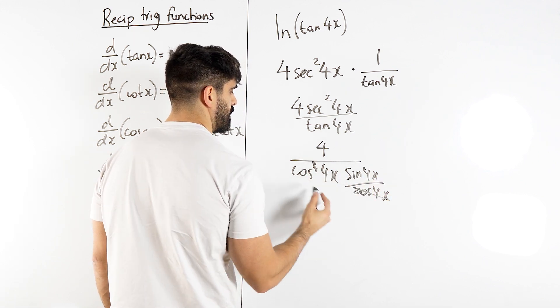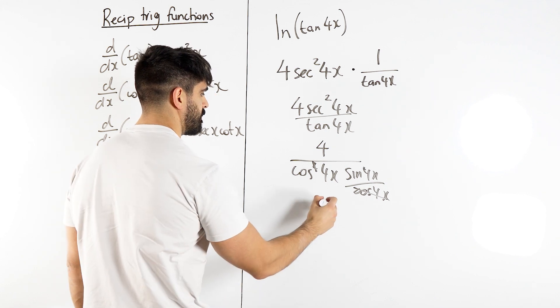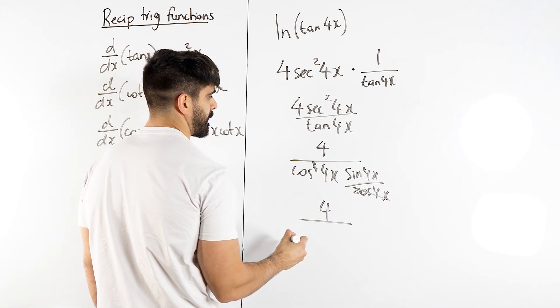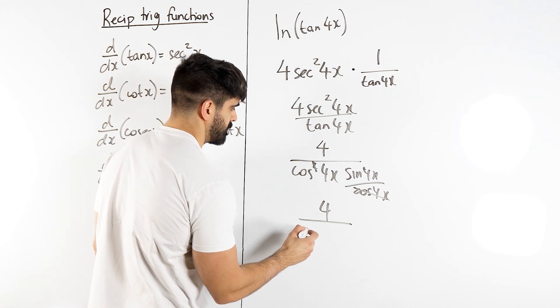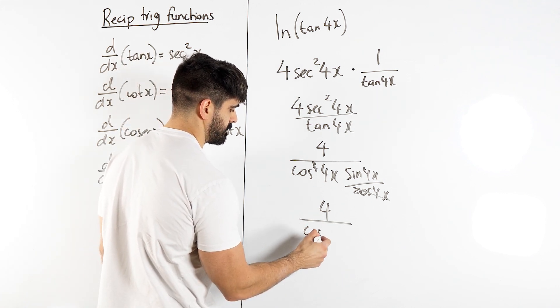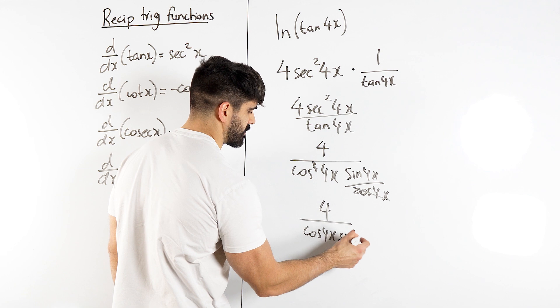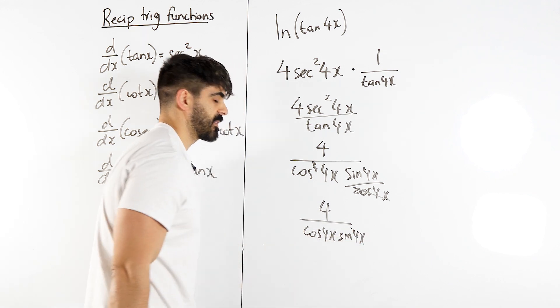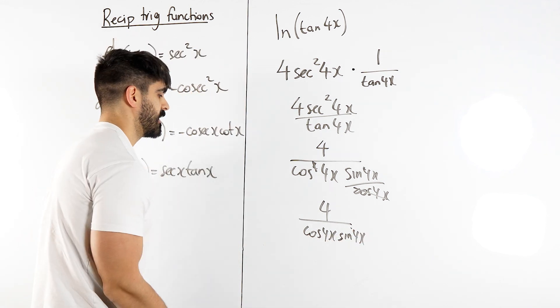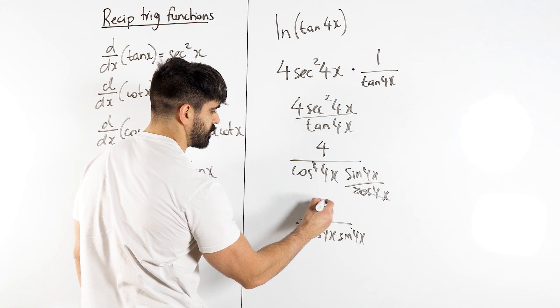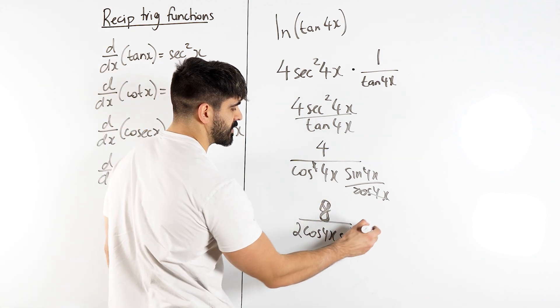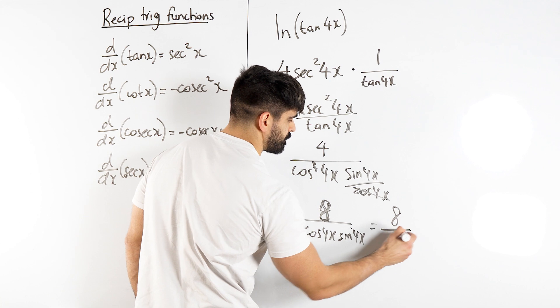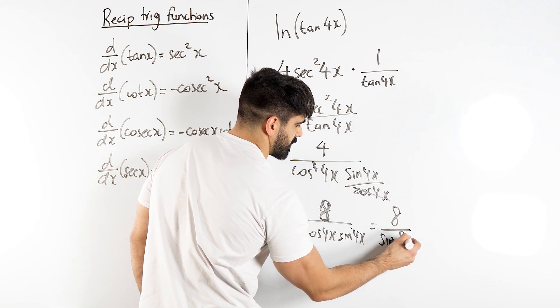That cancels with that. We get 4 cos 4x over sin 4x. You can simplify that even more. When you see cos 4x sin 4x, sin cos, I'm thinking about the double angle identities. If I just double top and bottom to make 2 and 8, I see that 2 sin cos is the double angle ID for sin, but you have to double the angle.